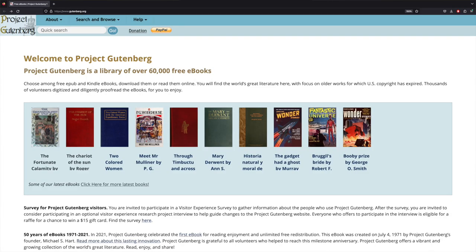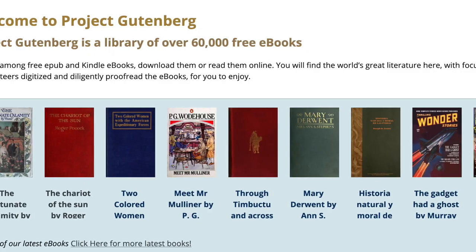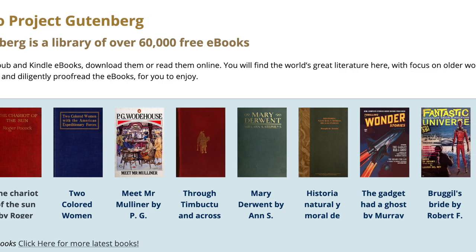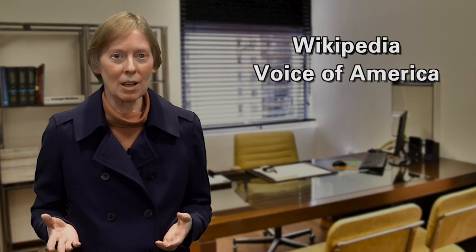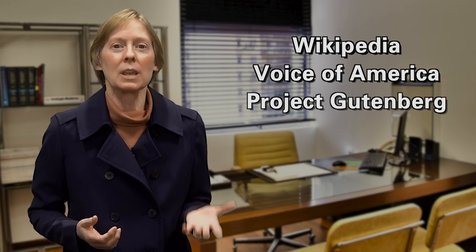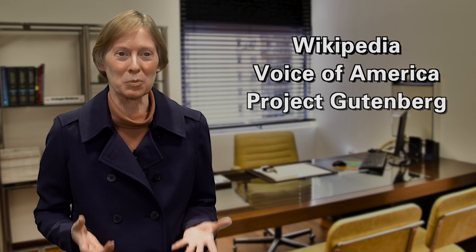If students want to read fiction, they will be very interested in the collection of books available online at the Project Gutenberg website, where they will find a library of over 60,000 free e-books. Wikipedia, Voice of America, and Project Gutenberg are three examples representing the endless material available to readers on the internet. There is something for everyone to read, regardless of their interests and knowledge.